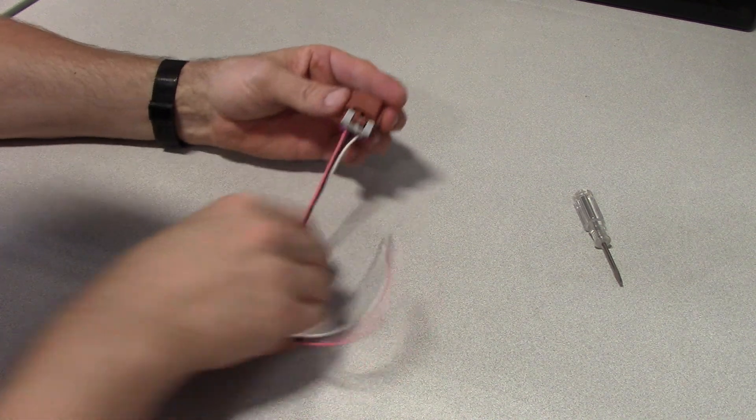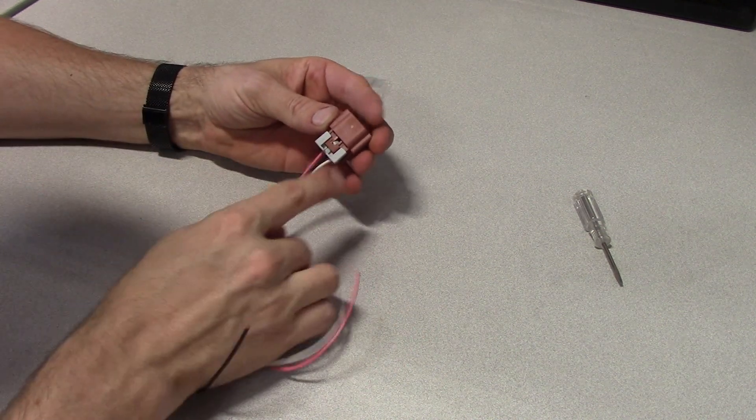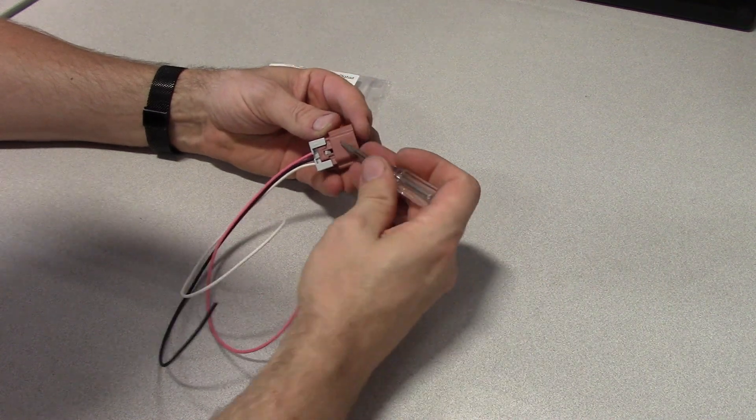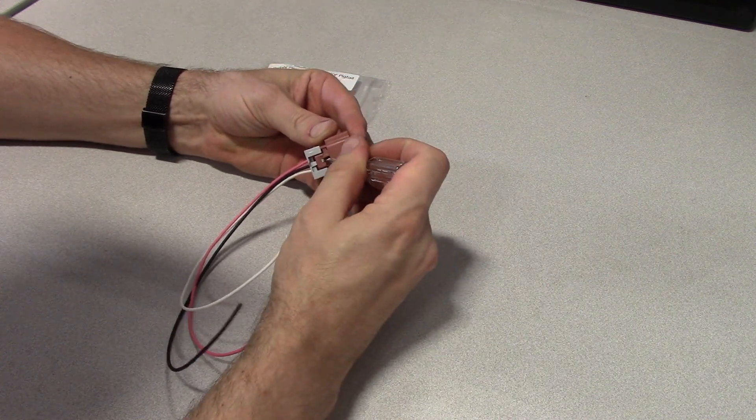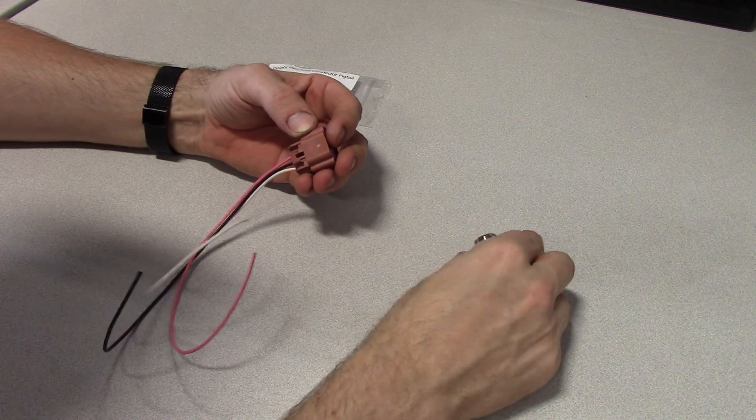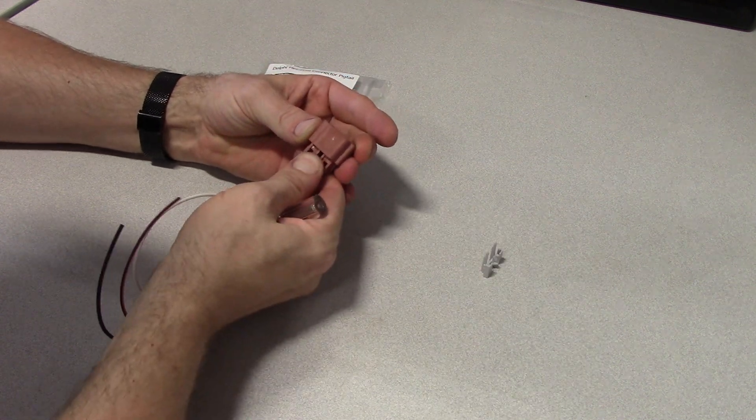So the first thing you do, if it has this gray lock, just grab a small screwdriver and then pry down here, pull the gray lock out. Then you can squeeze this tab and pull it off the sensor.